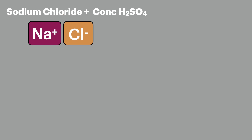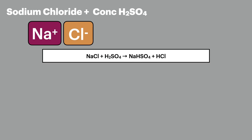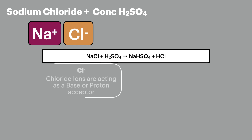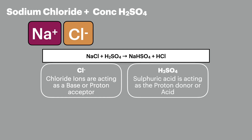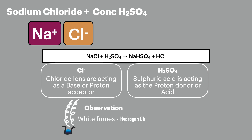The reaction of sodium chloride is very similar, just producing hydrogen chloride instead. Some exam questions ask what roles the chloride ion and the sulfuric acid are playing. As this is an acid-base reaction, the chloride ions are the proton acceptors or bases, and the sulfuric acid is acting as a proton donor or acid. In this reaction you'll see the white misty fumes of hydrogen chloride — a very similar observation to sodium fluoride — and like hydrogen fluoride these fumes will also turn blue litmus paper red.